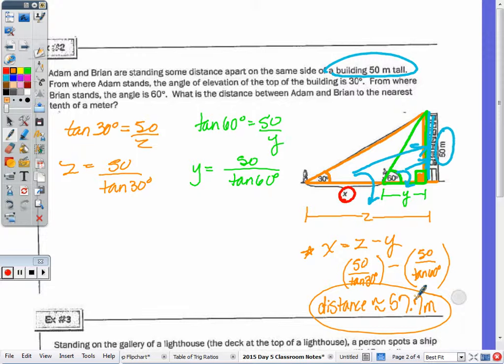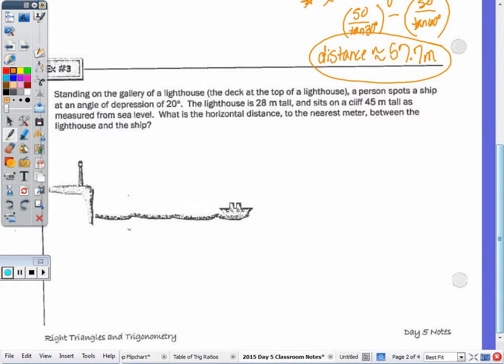Number three. So standing on the gallery of a lighthouse, which is the deck at the top of the lighthouse, a person spots a ship at an angle of depression of 20 degrees. The lighthouse is 28 meters tall, so let's mark that in the picture. And it sits on a cliff, which is 45 meters tall as measured from sea level.